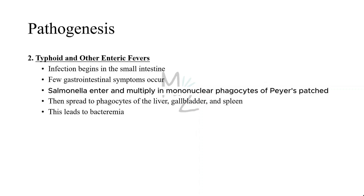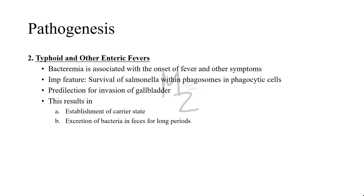In typhoid and other enteric fevers, infection begins in the small intestine but few gastrointestinal symptoms occur. Salmonella enter and multiply in mononuclear phagocytes of Peyer's patches, which are present in the small intestine, and then spread to phagocytes of the liver, gallbladder, and spleen. This leads to bacteremia, which is associated with the onset of fever and other symptoms, probably caused by endotoxin. Survival and growth within phagosomes in phagocytic cells is a striking feature of this disease, as is the predilection for invasion of the gallbladder, which can establish the carrier state and lead to excretion of bacteria in feces for long periods.